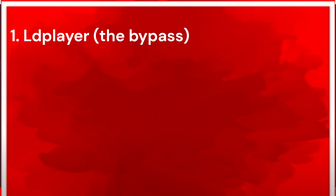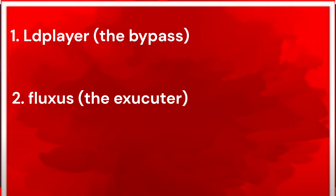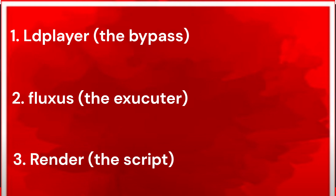There are three things to exploiting. First you need your bypass, which is basically a Roblox version that doesn't have the anti-cheat running, so you can hack without having to worry about it. The second thing you need is an executor, which basically executes the script. We'll get into the script in a second, but the executor is really important.